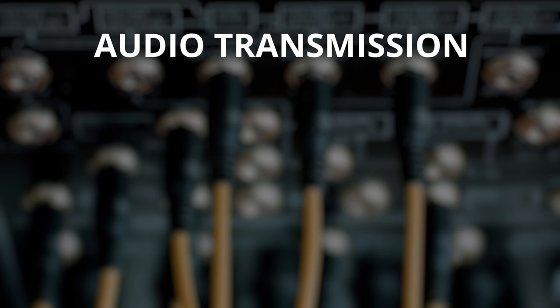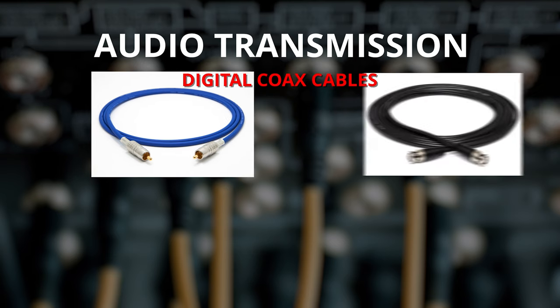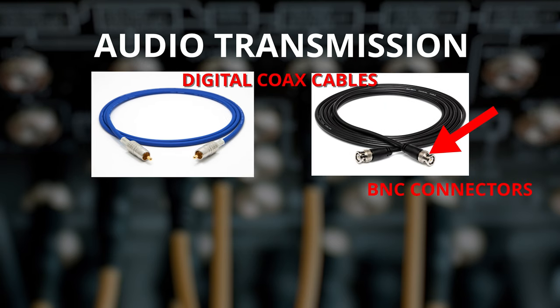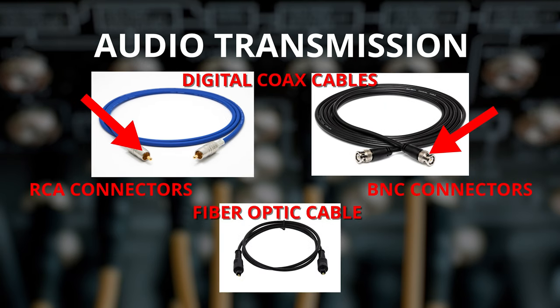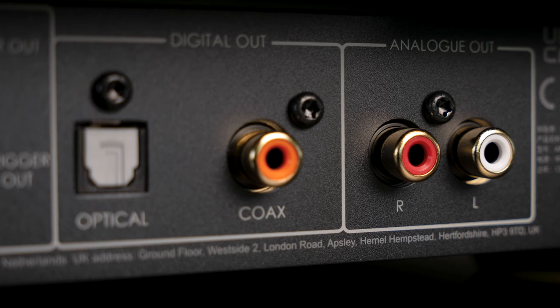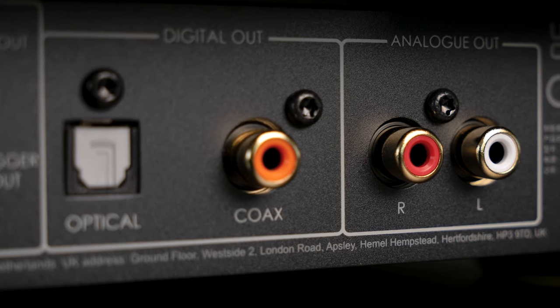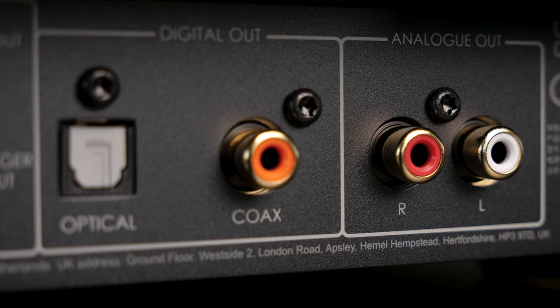These audio signals are then transmitted over either a digital coax cable that has either BNC or RCA connectors, or a fiber optic cable using Toslink connectors. You see these most commonly with home theater systems or digital hi-fi systems.